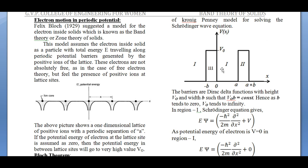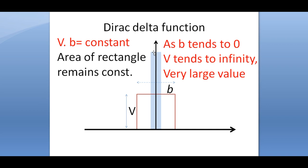While solving the problem, Kronig and Penney chose these barriers as rectangular Dirac delta functions. What is a Dirac delta function? This Dirac delta function is something like a rectangular barrier — in reality it is not exactly a rectangular barrier, but one can imagine it as one. The barrier's height is V and width is b, so the area is V × b.